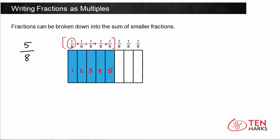Now if we want to write this as a multiple, remember that you need to keep in mind the unit fraction, which is 1 eighth, and the number of times you add that together — how many eighths there are. In this case there are 5 one-eighth pieces, so the multiplication sentence for 5 eighths would look like 5 times 1 eighth. Let's practice again with another fraction.